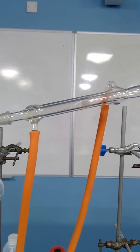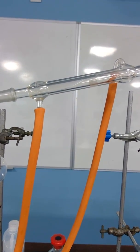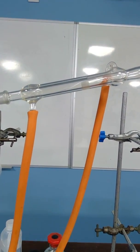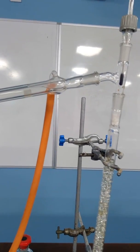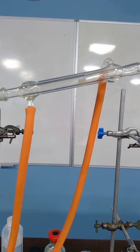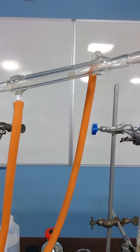This is the Liebig condenser which is set up so the water comes in from the bottom of the jacket that is around the tube that delivers the condensed liquids, and the water comes out at the top in part to fill the jacket but also to create the most effective temperature gradient for condensation.